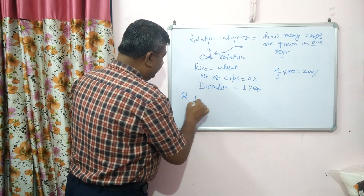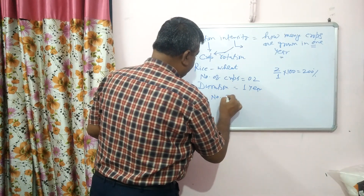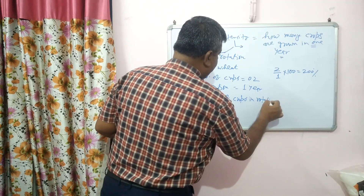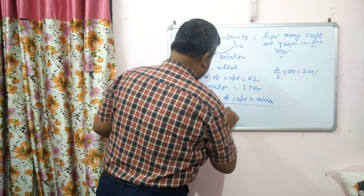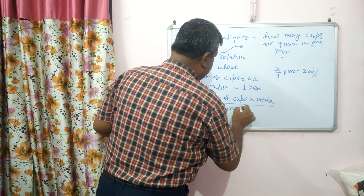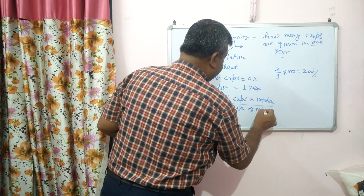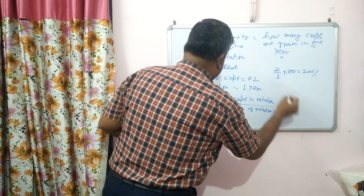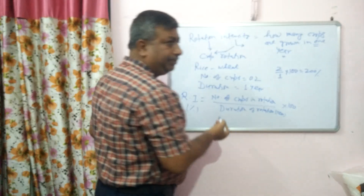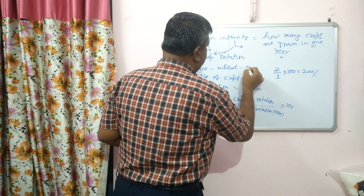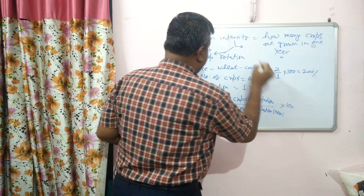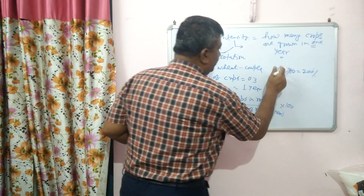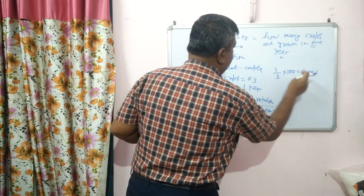Rotation intensity is calculated as: number of crops in rotation divided by duration of rotation in years, multiplied by 100 to convert to percentage. Suppose the rotation is rice-wheat-cowpea — that is a one-year rotation with 3 crops. So it is 3 divided by 1, that is 300 percent.